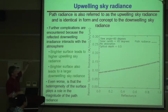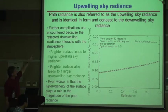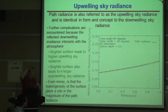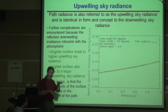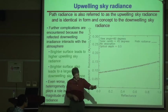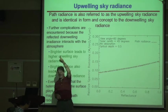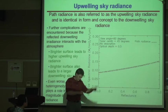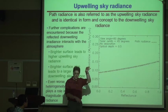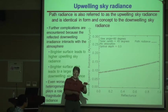A little more about upwelling radiance — path radiance is the upwelling sky radiance. The complications arise because reflected downwelling light interacts with the atmosphere, creating multiple scattering paths. You can't just count one path of sun → atmosphere → ground → sensor. You've got to worry about multiple bounces, especially as reflectance and atmospheric loading increase.